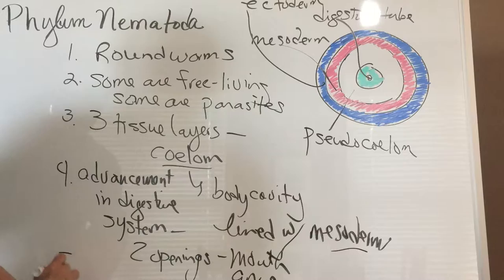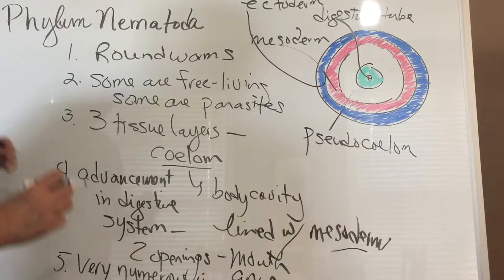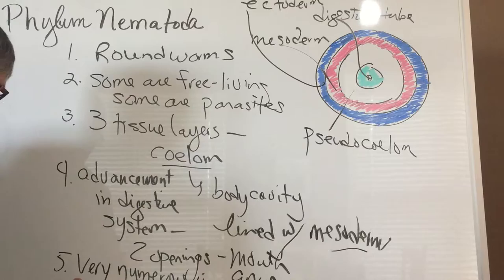A couple other characteristics: these are very numerous in the soil, they tend to be rather small, so you would need a dissecting microscope to see them. We saw a lot of these when we looked at the creatures that were on the surface of lichens, and they also can be found in mosses. Okay, one last characteristic, number six, they are important decomposers.